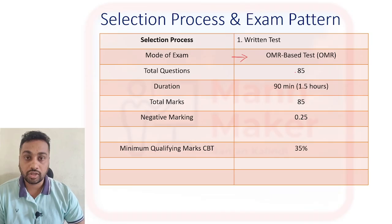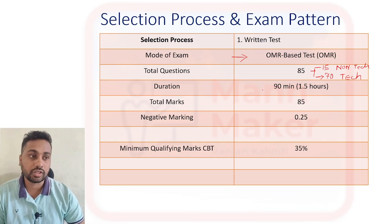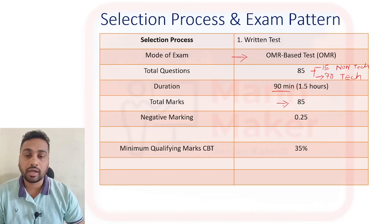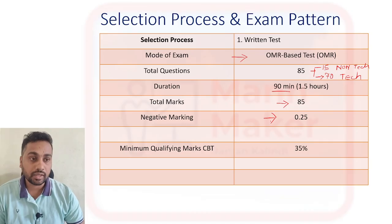In the exam you will get 85 questions total. Out of that, 15 questions will be from the non-technical section and 70 questions will be from the technical section related to your branch. For this exam you will get 90 minutes, that is 1.5 hours, and total marks will be 85 — one mark for each correct answer. There is also negative marking: 0.25 negative marking for each wrong answer.